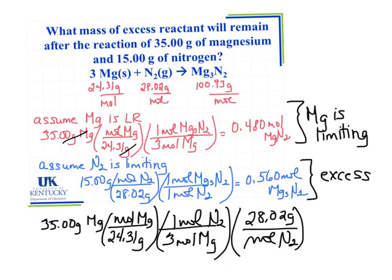Now I can cancel out my units: grams of magnesium cancel, moles of magnesium cancel, and moles of nitrogen cancel, leaving me with grams of nitrogen. Using the molar mass of nitrogen completes the conversion. When I do the calculation, I find that I need 13.45 grams of nitrogen to completely react with that 35 grams of magnesium.